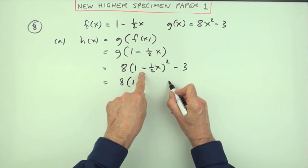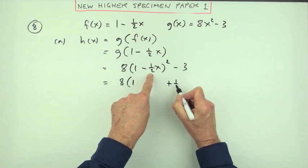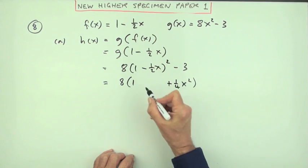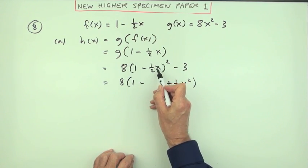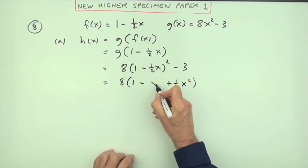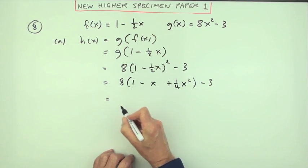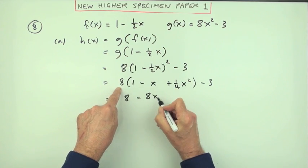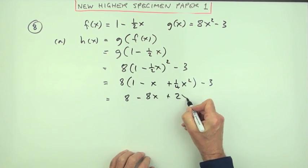Square the last—negative becomes positive. A half squared is a quarter. Twice the product—well, the product is -½x, so doubling that back to just -x minus 3. Multiply it out: 8 - 8x. A quarter of 8 is 2, plus 2x² minus 3.